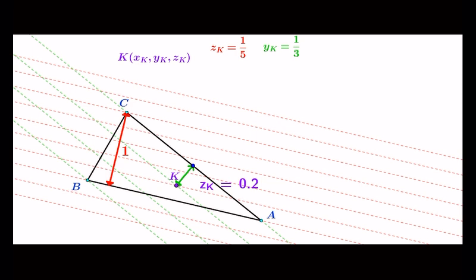It goes without saying that we can do the same for the coordinate x_K. But this is not necessary because we know that the coordinates sum to 1. So we can find that x_K is equal to 7/15.